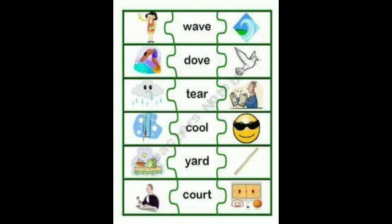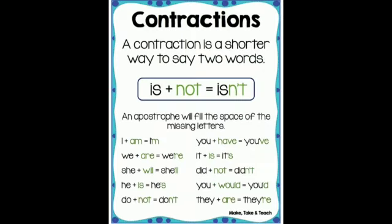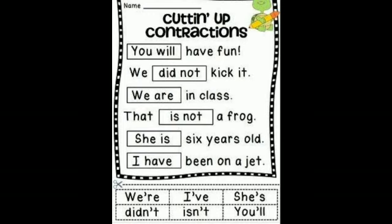Now we will see what contractions are. A contraction is a shorter way to say two words. For example, 'is' plus 'not' equals 'isn't'. An apostrophe fills the space of the missing letter. 'I' plus 'am' — the 'a' is removed and 'm' is added with an apostrophe. Other examples: you've, you're, it's, she'll, didn't, he's, you'd, don't, they're.